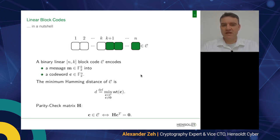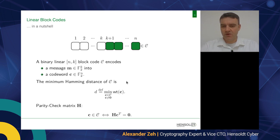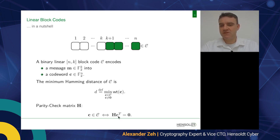I want to give you a short intro into linear codes. We denote a code by the calligraphic C. An (n,k) linear code maps a message of length k to a codeword of length n, where n is larger than k. The minimum Hamming distance is the minimum weight over all nonzero codewords. An important property of a code is the parity check matrix H: for all codewords in the code, H times the codeword transposed gives zero — this is an if-and-only-if condition.